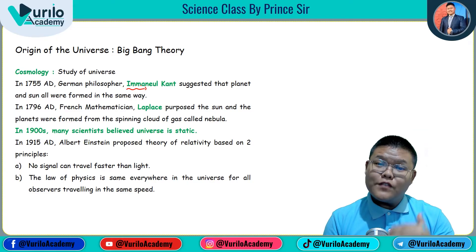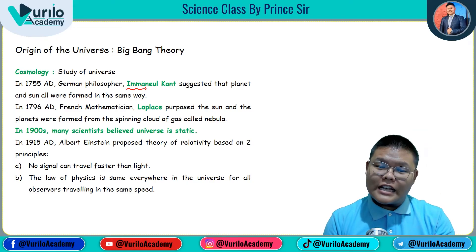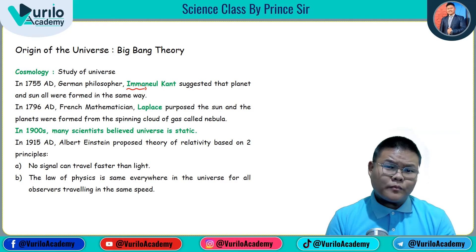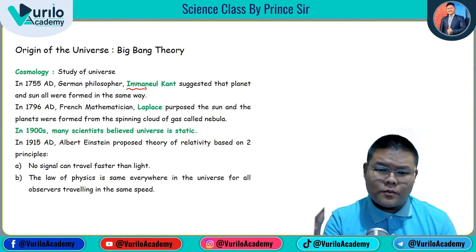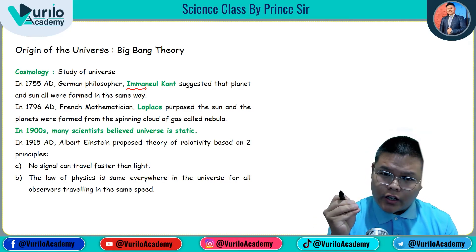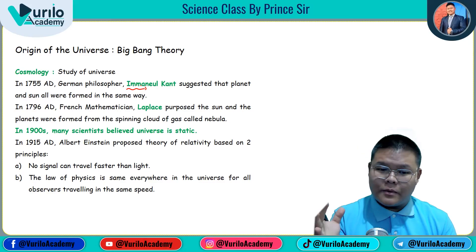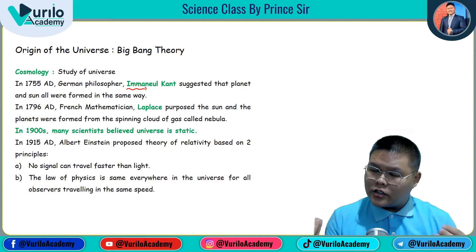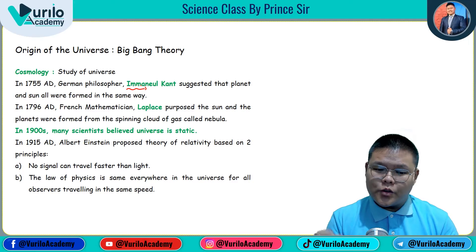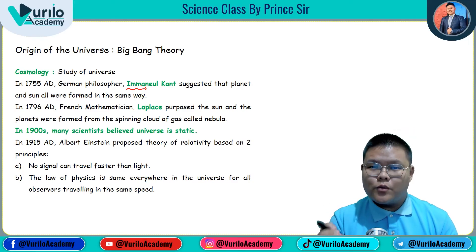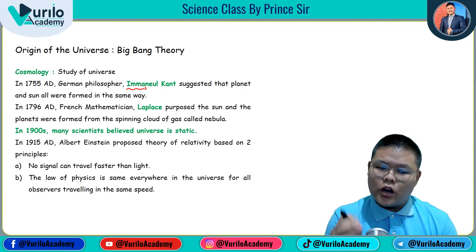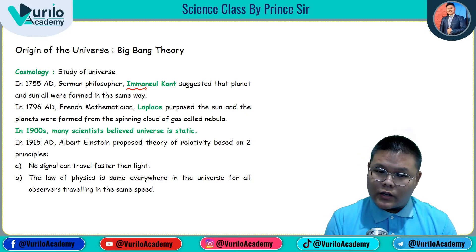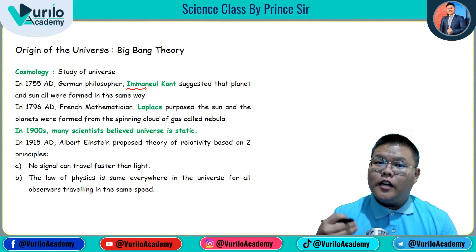In 1915, even Albert Einstein, in his theory of relativity, described how light is the fastest object — a signal — and that light can travel fast across the universe. The speed of light was considered the universal speed limit.